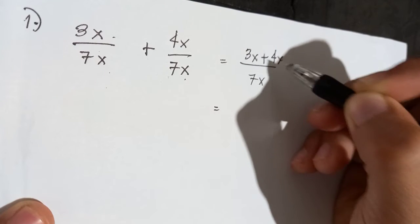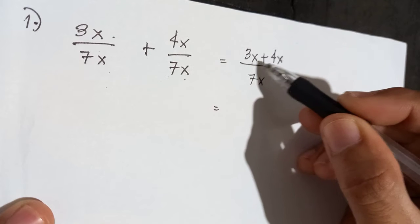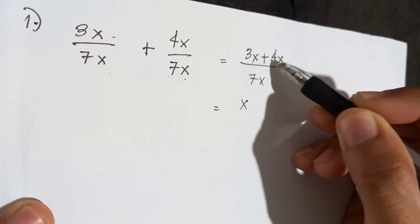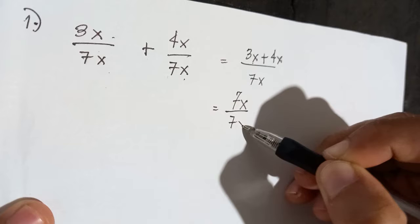3x plus 4x. Add because they have common terms. The common term is x. Then add the numbers. 3 plus 4 equals 7. All over 7x.